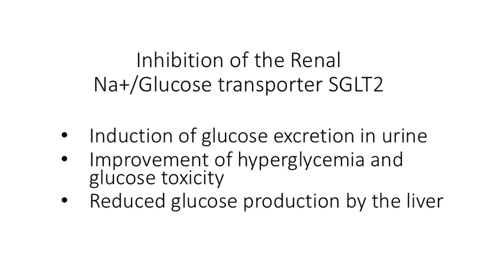It's been known for a long time that if you can induce the excretion of glucose into the urine, you can also help to ameliorate hyperglycemia — that's basically the strategy of these drugs — also to reduce the tendency for glucose to be toxic. That glucose toxicity is a negative effect on the beta cells themselves. In addition, these drugs can lead to reduced glucose production by the liver, although that's a secondary effect.